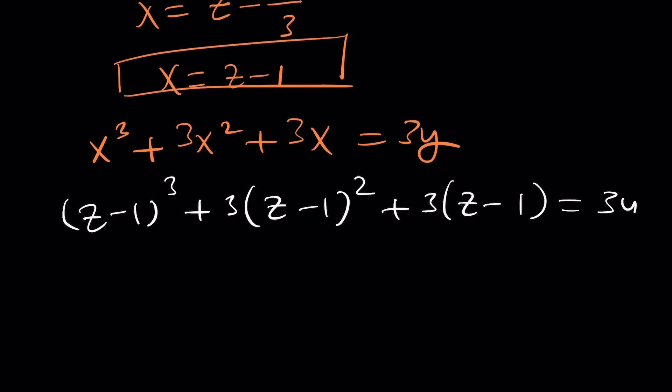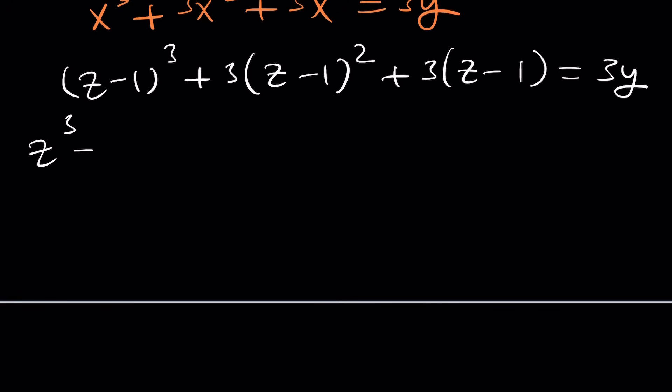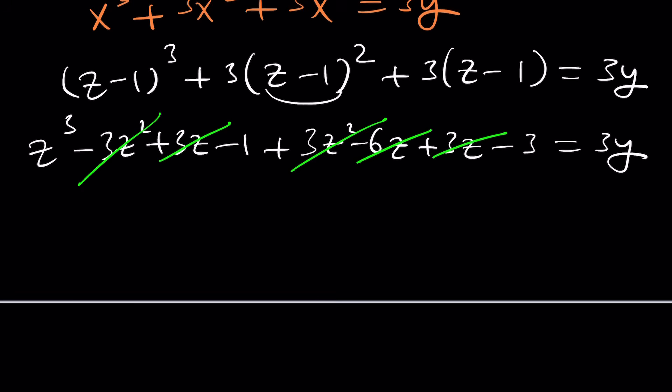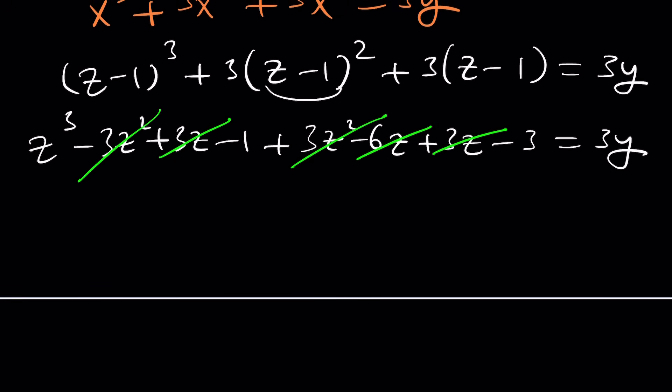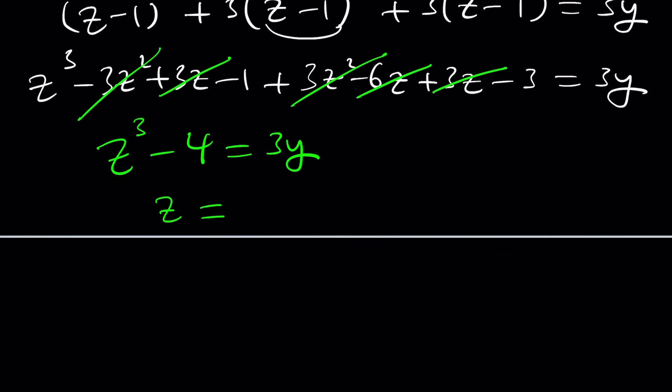Of course y is a constant, so it stays the same. If you expand, you get z³ - 3z² + 3z - 1 + 3z² - 6z + 3z - 3 = 3y. I hope z² cancels out—that's my goal. But uh-oh, 6z also cancels out, and I end up with something pretty interesting. It's z³ - 4 = 3y. Wow, that's pretty interesting. We were trying to solve for x but first we need to solve for z, and it's super duper easy.